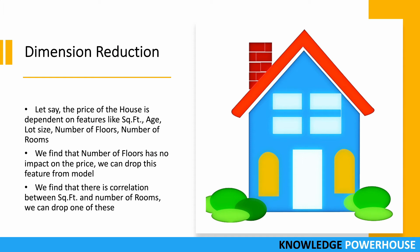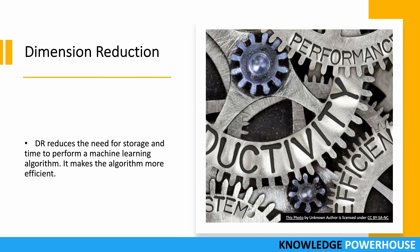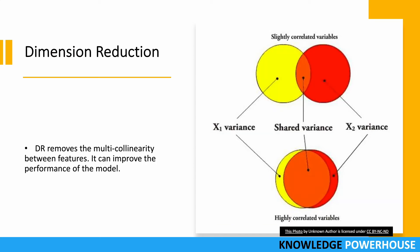By removing features that are not contributing, collinearity can be reduced. Dimension reduction also provides the benefit of reducing storage requirements and the time needed to perform a machine learning algorithm. Each dataset with multiple features requires storing and processing all that data. By reducing dimensions, compute time is saved and the algorithm becomes much more efficient, giving results much faster.